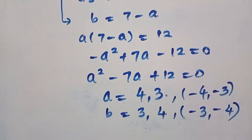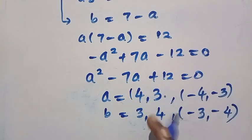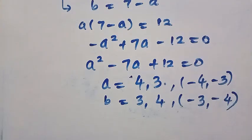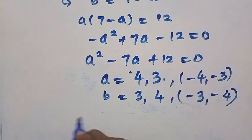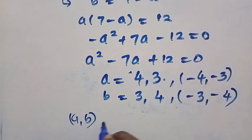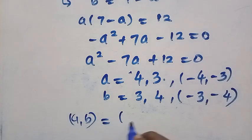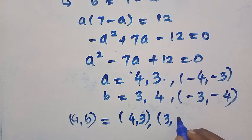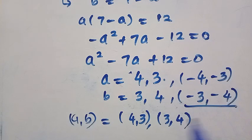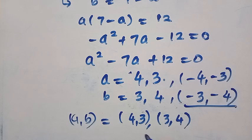So these are the values of A and B. In coordinate form: (A, B) equals (4, 3) or (3, 4), and also (minus 4, minus 3) or (minus 3, minus 4). Thanks for watching, and see you in the next video. Never stop learning. Bye-bye.